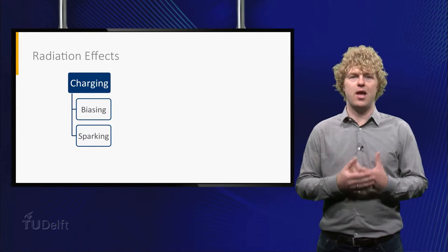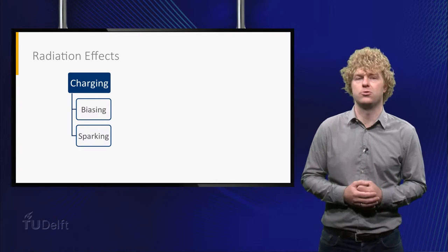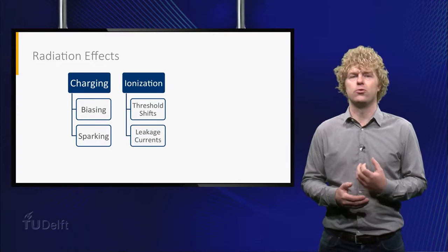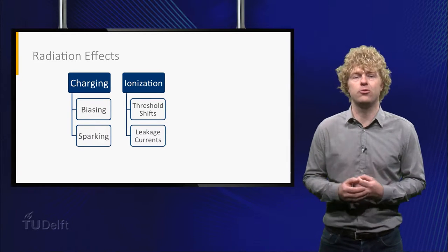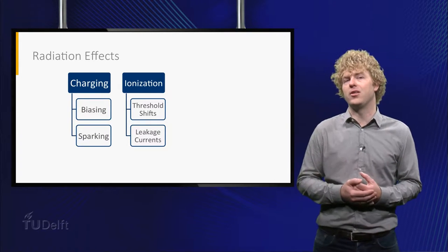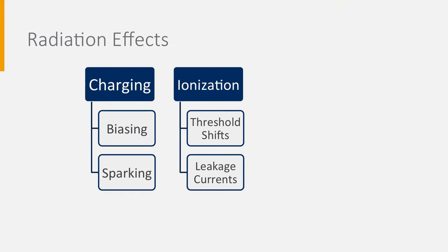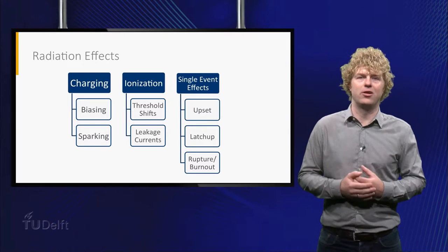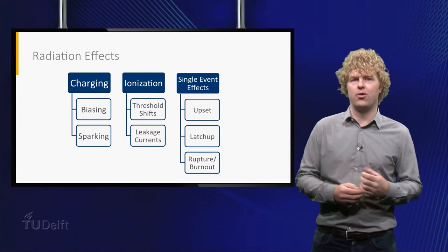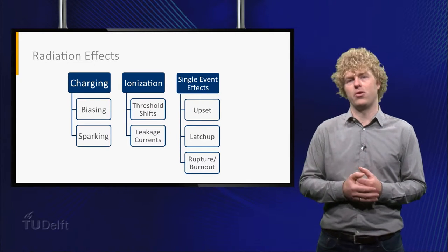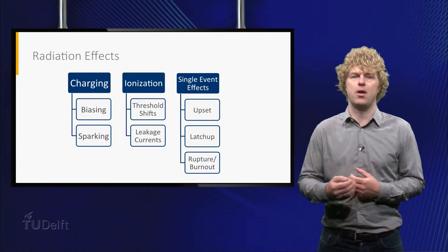A proper grounding of the body and the solar panels can prevent most charging issues. Ionization means that atoms or molecules within the electronics lose or gain an electron due to a hit with a radiation particle. A single ionization typically does not significantly change the properties of an electrical component, but the buildup over time can change the threshold values and lead to leakage currents. Single event effects are events which immediately take place after a radiation particle strikes. An upset is a change of state of a logic component — for instance, a bit flip in the memory or software.